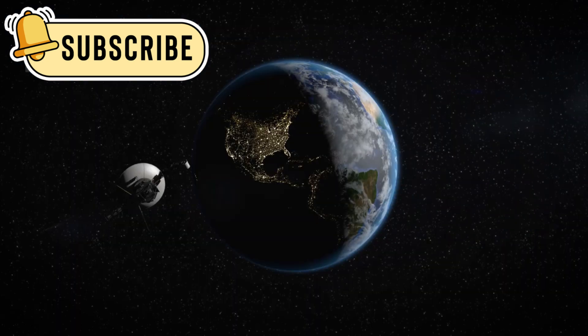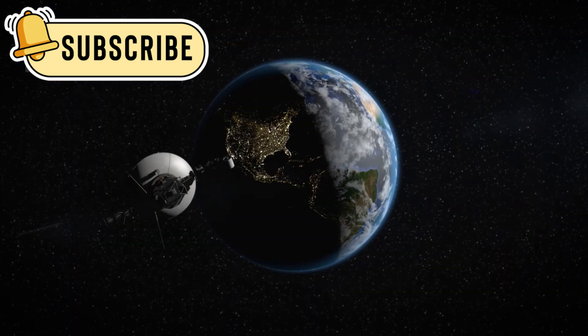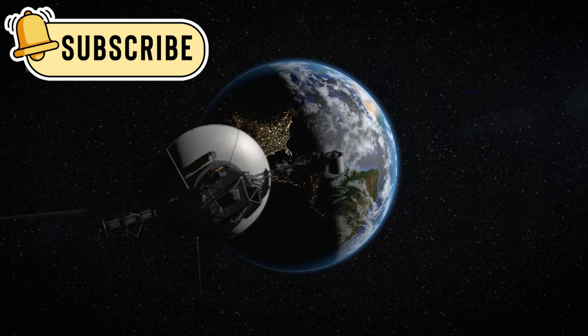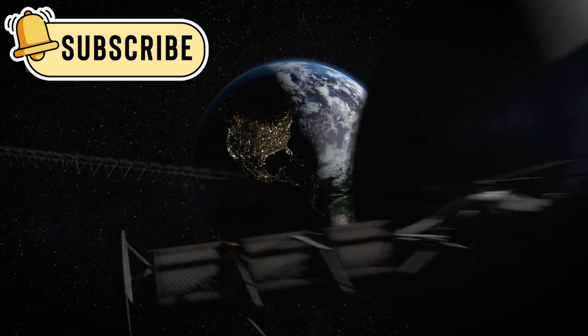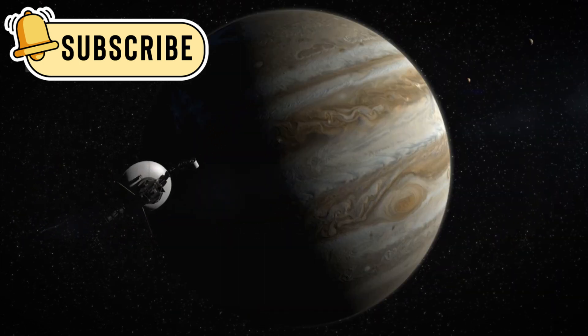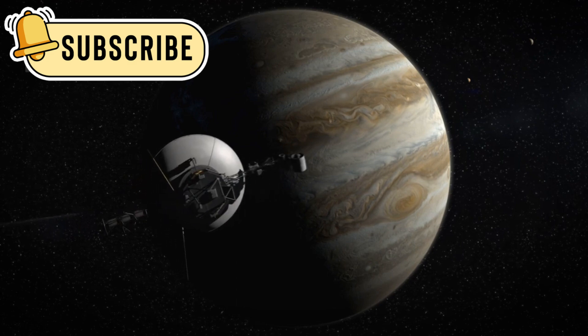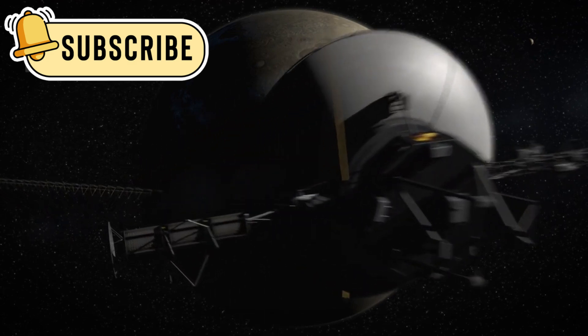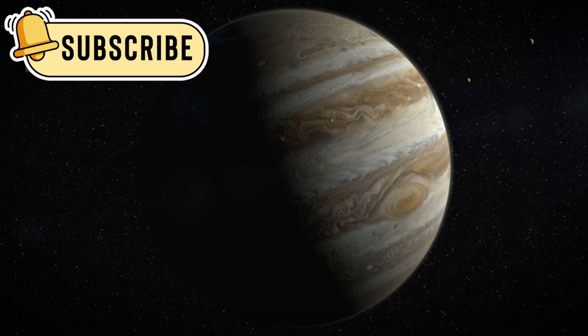However, this alignment only occurred once every 176 years, making it a once-in-a-lifetime opportunity. NASA acted swiftly, launching two identical spacecraft, Voyager 1 and Voyager 2, in the summer of 1977, only 15 days apart.